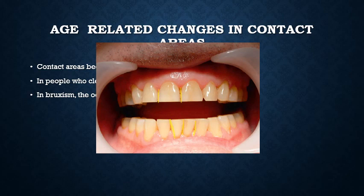A key clinical significance: toothbrushing cannot clean the contact area from the proximal aspect. To clean the proximal surfaces, flossing is the only method. Brushing and toothpaste do not clean the proximal surfaces or the contact areas, so flossing is essential for gingival health and overall oral health.